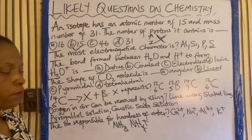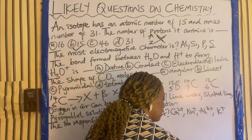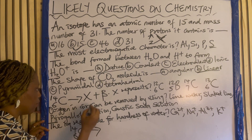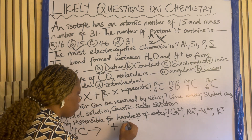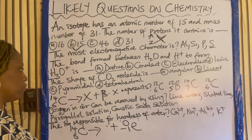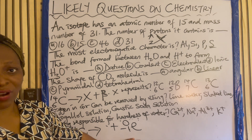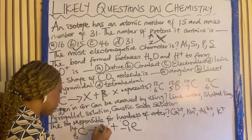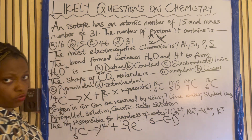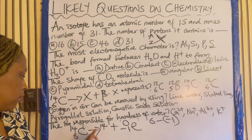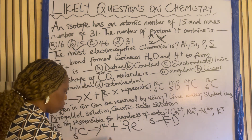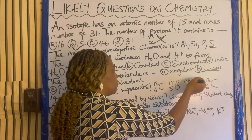This is radioactive chemistry. Looking at the decay equation, we have ¹⁴₆X decaying with a beta particle (⁰₋₁e). To find X: mass number = 14 − 0 = 14; atomic number = 6 − (−1) = 6 + 1 = 7. So X is ¹⁴₇N. The answer is C.